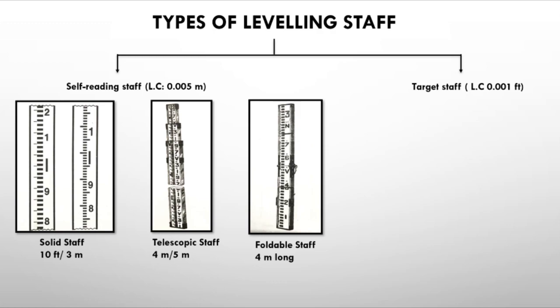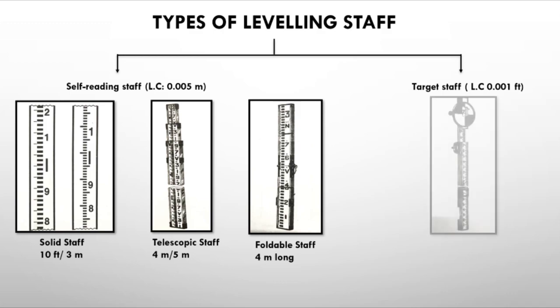The staff is mainly classified into two types: self-reading staff and target staff. The types of self-reading staff are solid staff, telescopic staff, and foldable staff. In a target staff, the staff man reads the target — that is why they are called target staff.